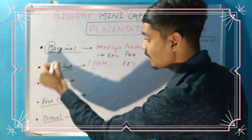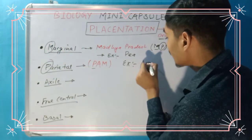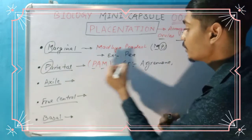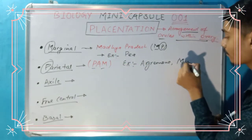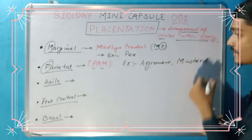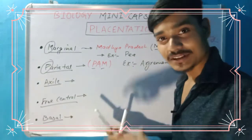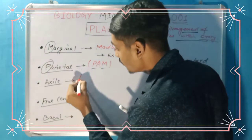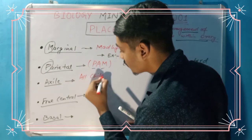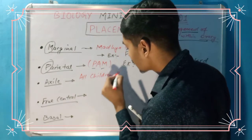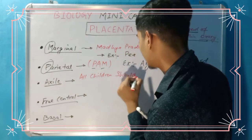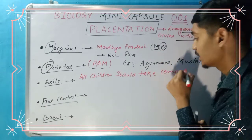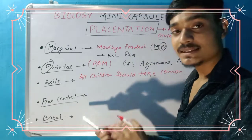P stands for parietal, A stands for Agrimony, and M for Master. The third one is very interesting, so it's going to be a trick. All children should take lemon — this is the mnemonic to remember the examples along with the name of axile placentation.